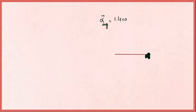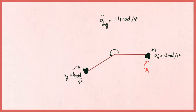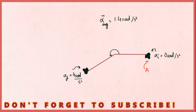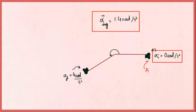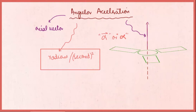For example, a stone undergoing angular motion from point A to B may have an average angular acceleration of 1 radian per second squared, while its instantaneous angular acceleration at point A is zero. In summary, average angular acceleration is the ratio of total change in angular velocity to total time taken, while instantaneous angular acceleration is the angular acceleration at a particular instant of time.